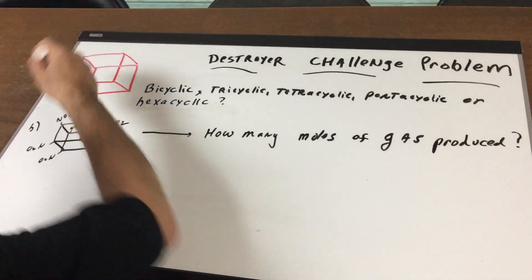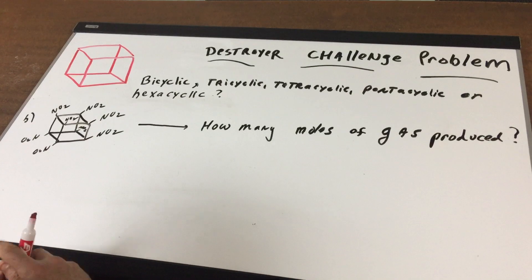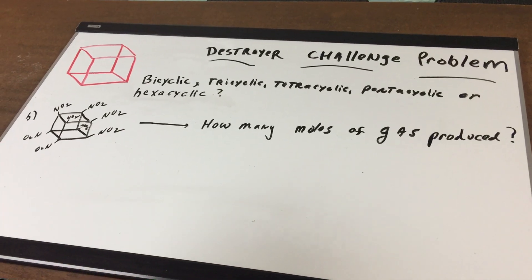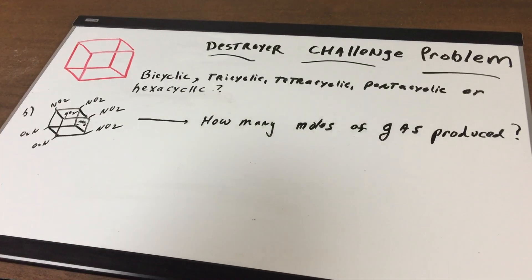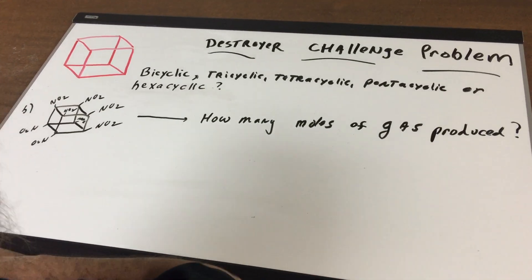What I want to do is I'm gonna give you a platonic solid. This is known as cubane and you thought cyclopropane was strained. Look at this little fella. This is an extremely strained molecule.